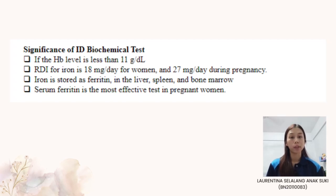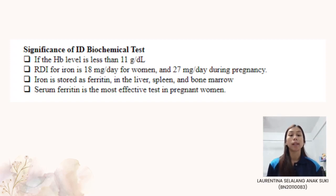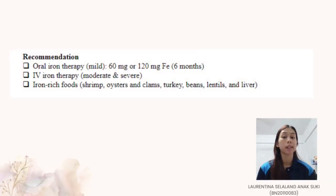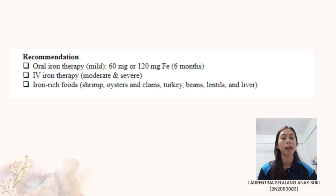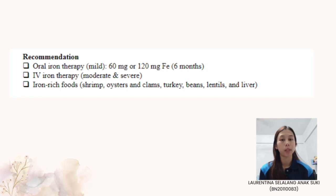Iron is stored as ferritin, a protein complex found in the liver, spleen, and bone marrow. Transferrin transports iron in the blood and is used to calculate TIBC. When TIBC rises, iron levels fall. The determination of serum ferritin is the most effective single test for detecting iron deficiency in pregnant women. Treatment is determined by the severity of the anemia — oral iron therapy is generally recommended for mild anemia, while intravenous iron therapy is used for patients with moderate to severe anemia.